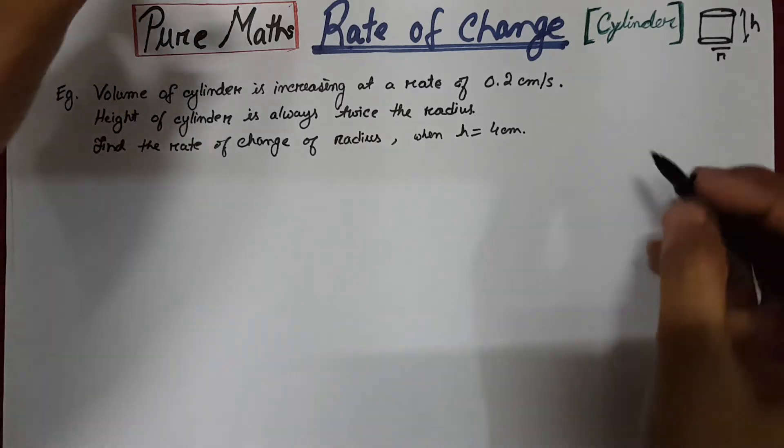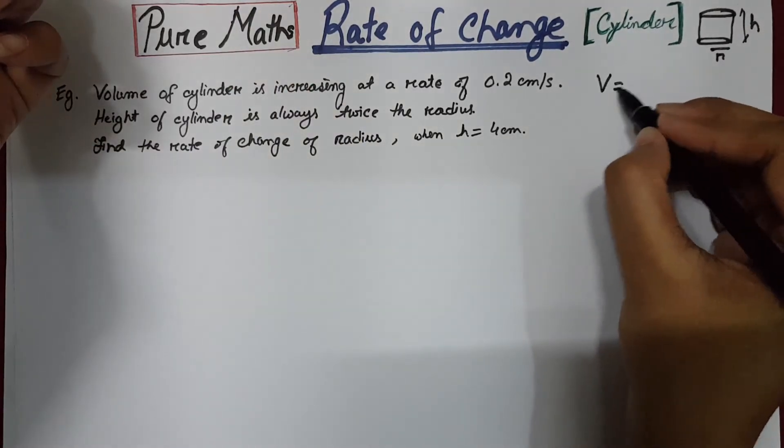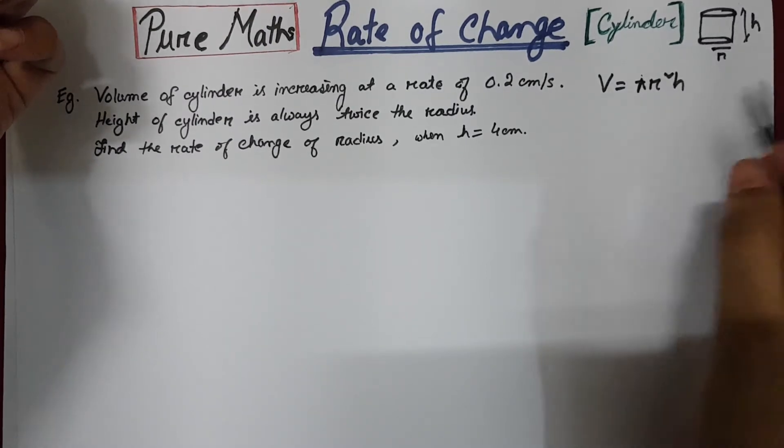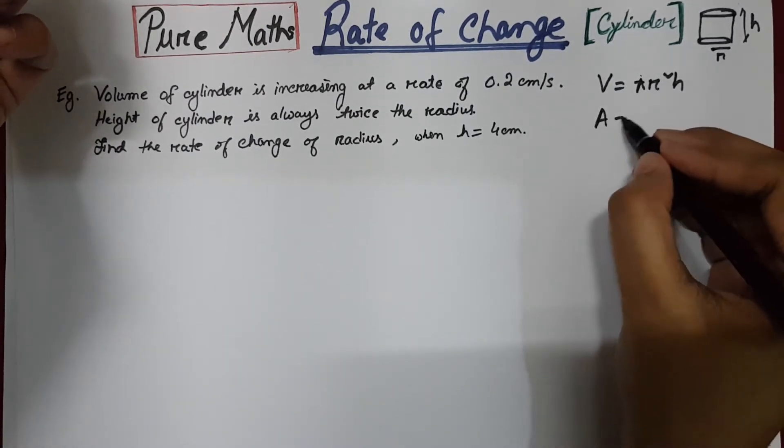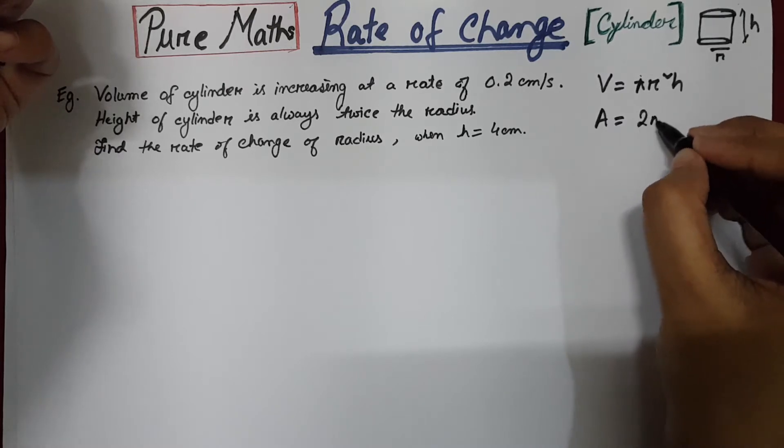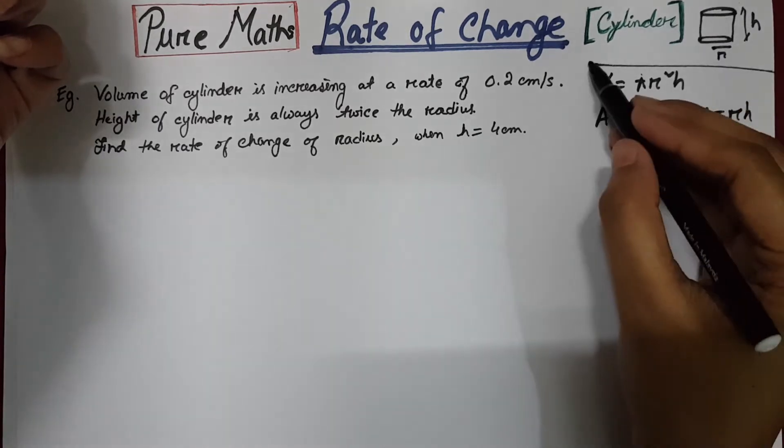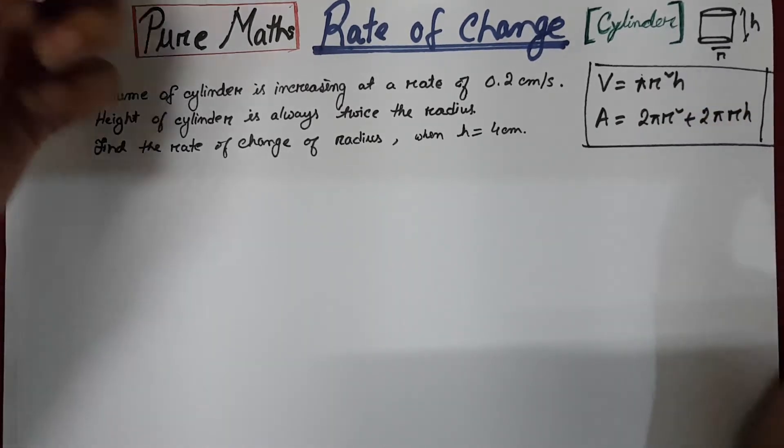We need to know two formulas here. The volume of the cylinder which is pi r square h and the total surface area of the cylinder which is 2 pi r square plus 2 pi r h. So these are the two formulas you need to memorize.